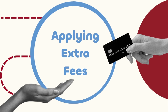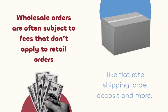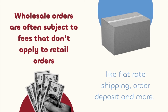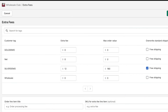If you need to apply extra fees to an order, there's a feature for that too. Available on the Wholesale Club Professional Plan, you can use extra fees for fine-tuned control over your wholesale shipping and order management. Wholesale orders are often subject to fees that don't apply to retail orders, like flat rate shipping and order deposits. In this example, a customer tagged with silver demo would be charged an extra fee of $12 for shipping, but if they purchase over $180 of goods, they'll be eligible for free shipping. The gold demo customer has no extra fee and will be charged the same shipping rates as retail customers.